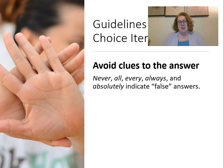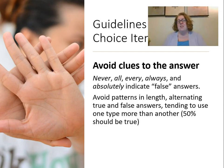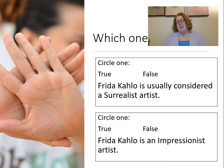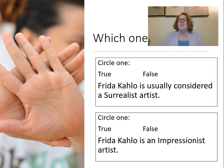Avoid clues in the answer. Words like 'never,' 'all,' and 'always' are indicators of false answers because absolute statements are generally false. Make sure trues and falses balance each other out more or less. Also, qualified statements like 'Frida Kahlo is usually considered a surrealist artist' signal that the answer is true because the statement is hedged — but then 'usually' introduces ambiguity. It's not definitively true or false, which just adds confusion.